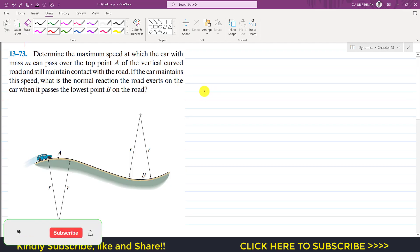Hello students, welcome to Engineer Educate Me. Now we are going to solve this problem which says that determine the maximum speed at which the car with mass m can pass over the top point A of the vertical curved road and still maintain contact with the road. If the car maintains this speed, what is the normal reaction the road exerts on the car when it passes the lowest point B on the road?